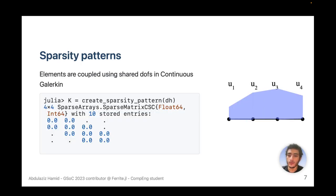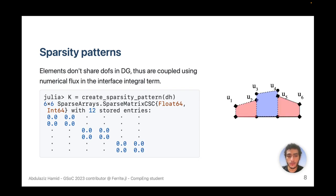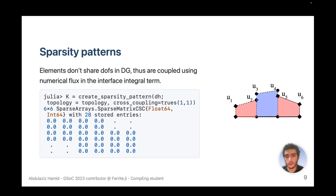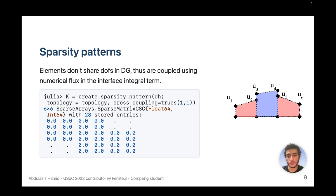For sparsity patterns, in the continuous case there is already coupling through shared degrees of freedom, but for the discontinuous case the degrees of freedom are not shared so that coupling disappears. Before this project we didn't have a way to couple elements without shared degrees of freedom. We added keyword arguments for topology and cross-coupling, and now we can couple discontinuous interpolations, grids with mixed interpolations, and continuous interpolations — all options are available.